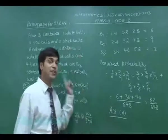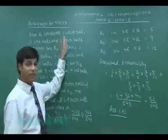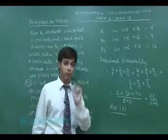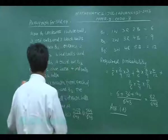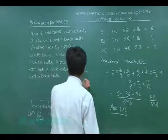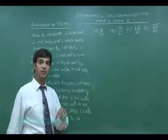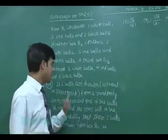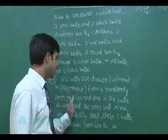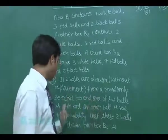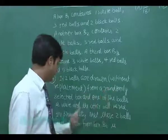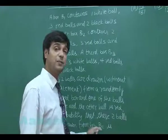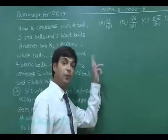Let us move to the next question of this paragraph which was for 53 and 54. We discussed the 53rd. Let us talk about the 54th question now. Question number 54 for the same paragraph. If two balls are drawn without replacement from a randomly selected box and one of the balls is white and the other ball is red, the probability that these two balls are drawn from box B2 is. Four options are given then.